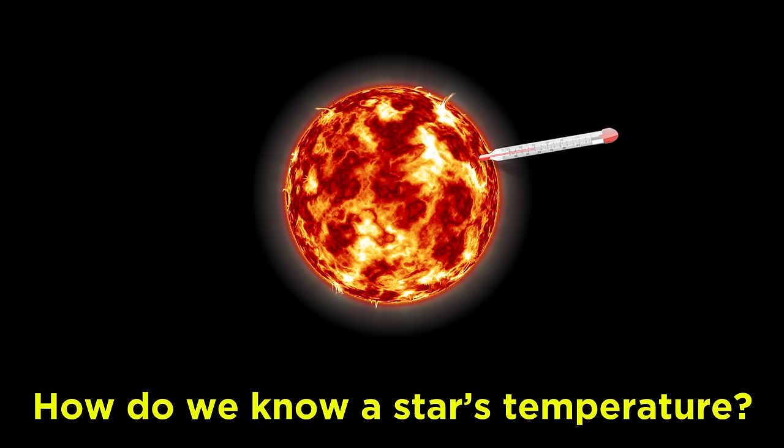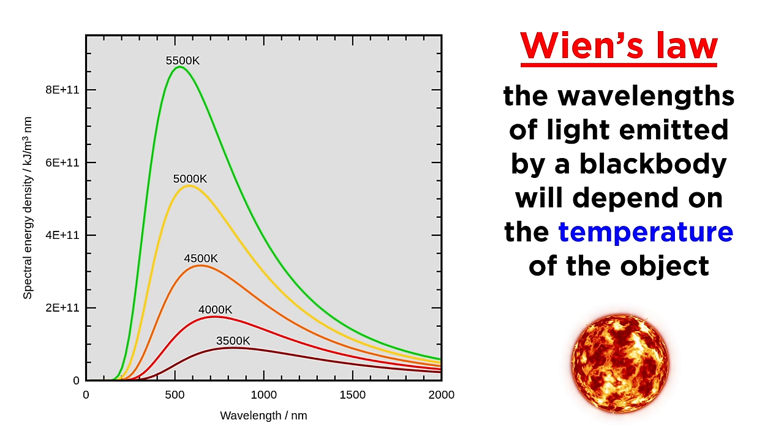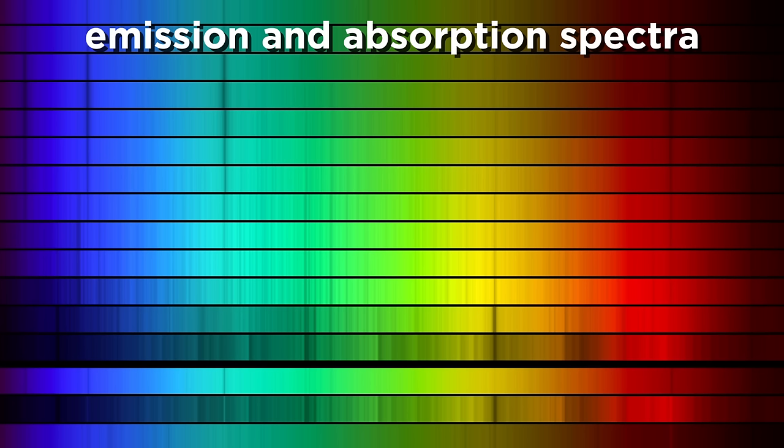As we can't stick a thermometer into a star to see how hot it is, this classification, based on temperature, is actually derived from Wien's law regarding blackbody radiation, which we saw in the Modern Physics series, as well as other types of data, like emission spectra.